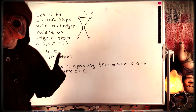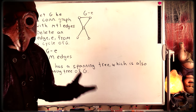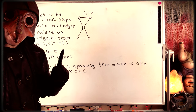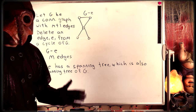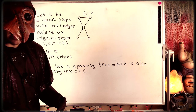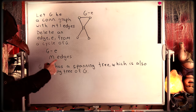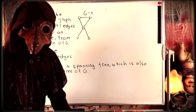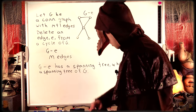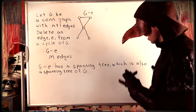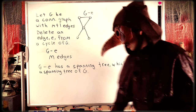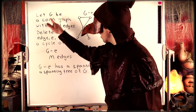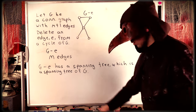We deleted an arbitrary edge e from a cycle of G, giving us G minus e, which is a subgraph of G. It must have m edges, because we deleted a single edge, and we know it's connected because we deleted that edge from a cycle. Note that G minus e is also a spanning subgraph of G, because we didn't delete any of G's vertices. Then we can apply our induction hypothesis to G minus e to know it has a spanning tree — and that spanning tree is certainly also a spanning tree of G, because G and G minus e have the same vertex sets and G minus e is a subgraph of G. So if this tree exists in G minus e, it also exists in G, and since it's a spanning tree of G minus e, which has the same vertex set as G, it's also a spanning tree of G.